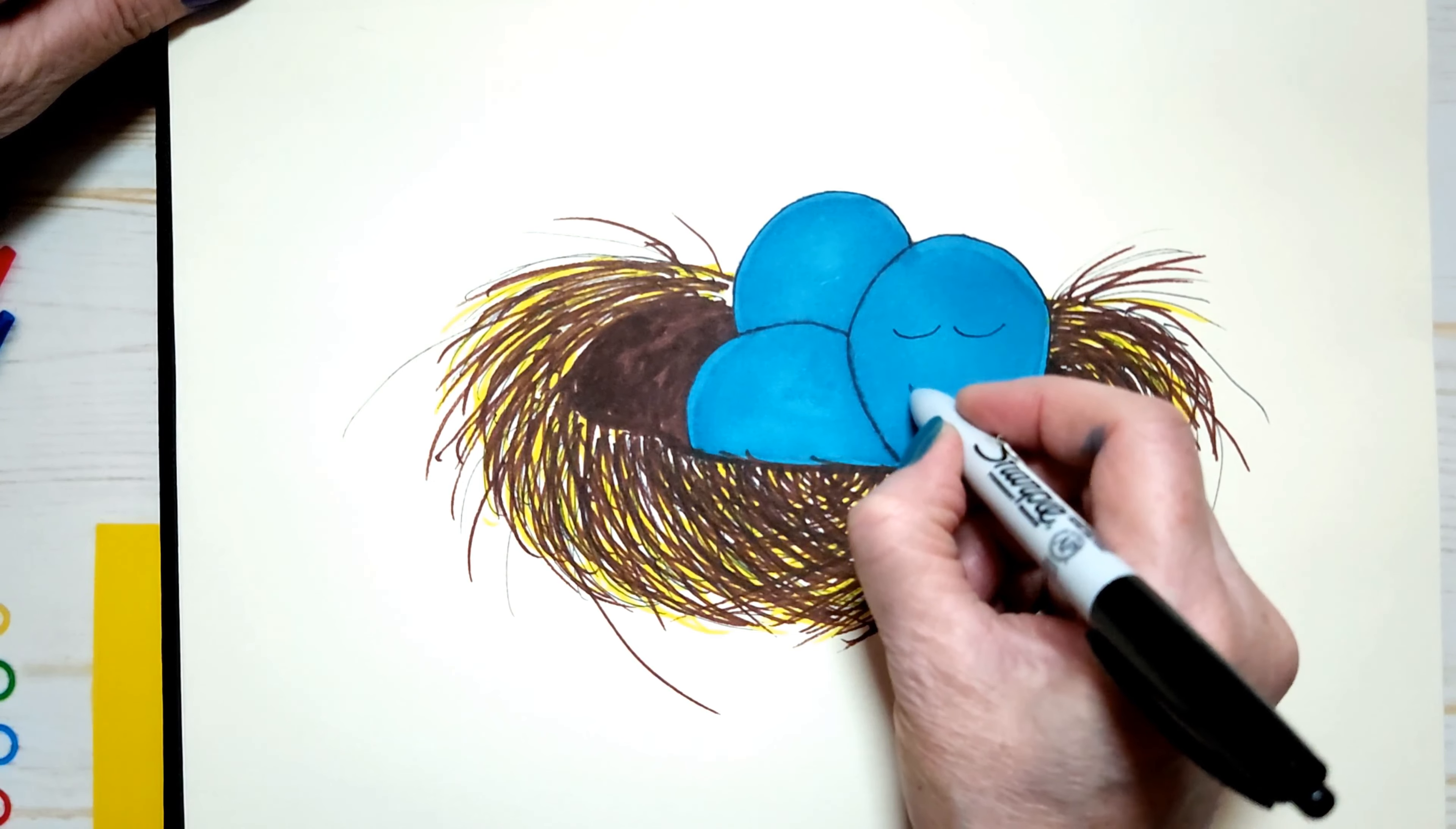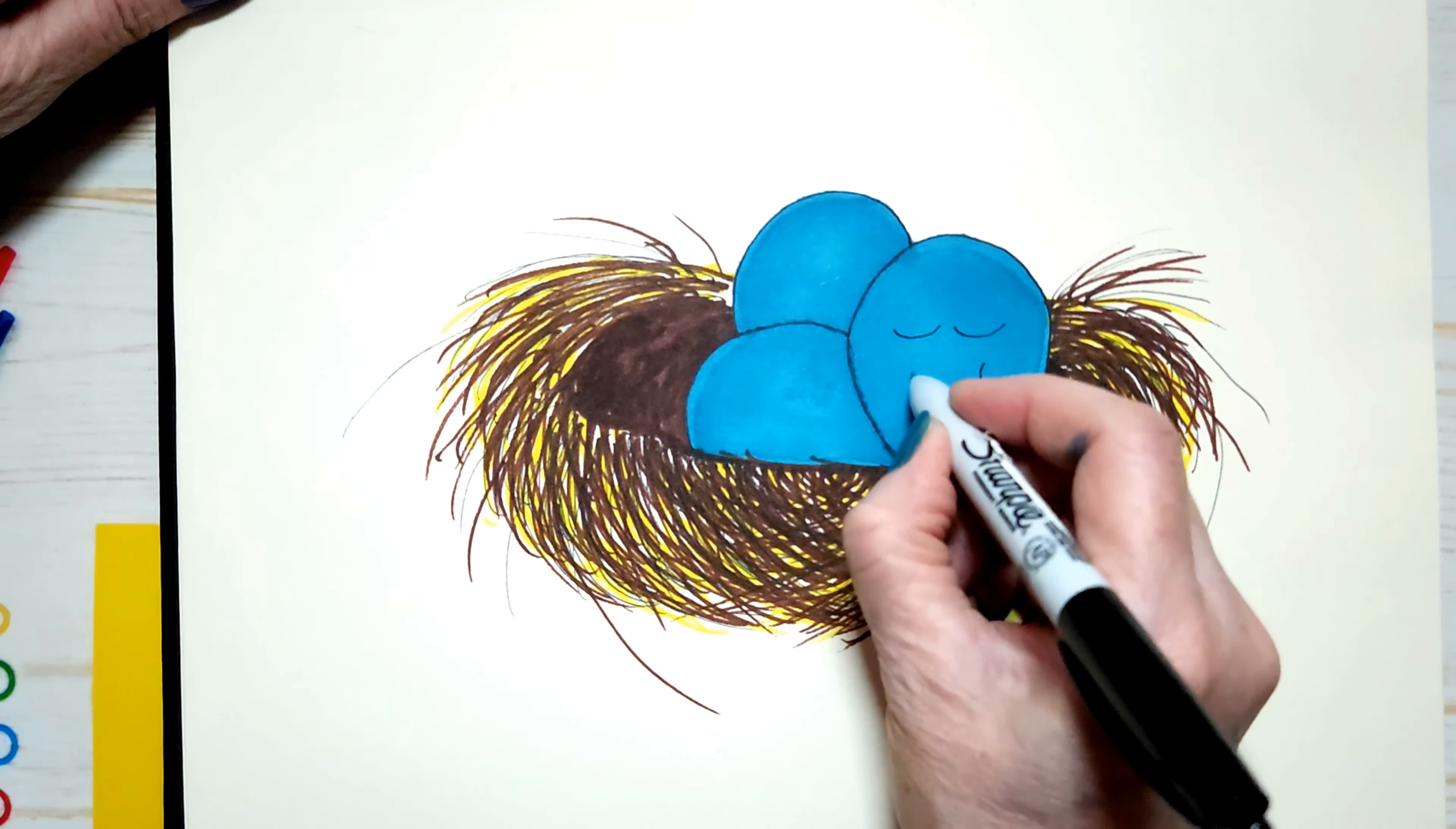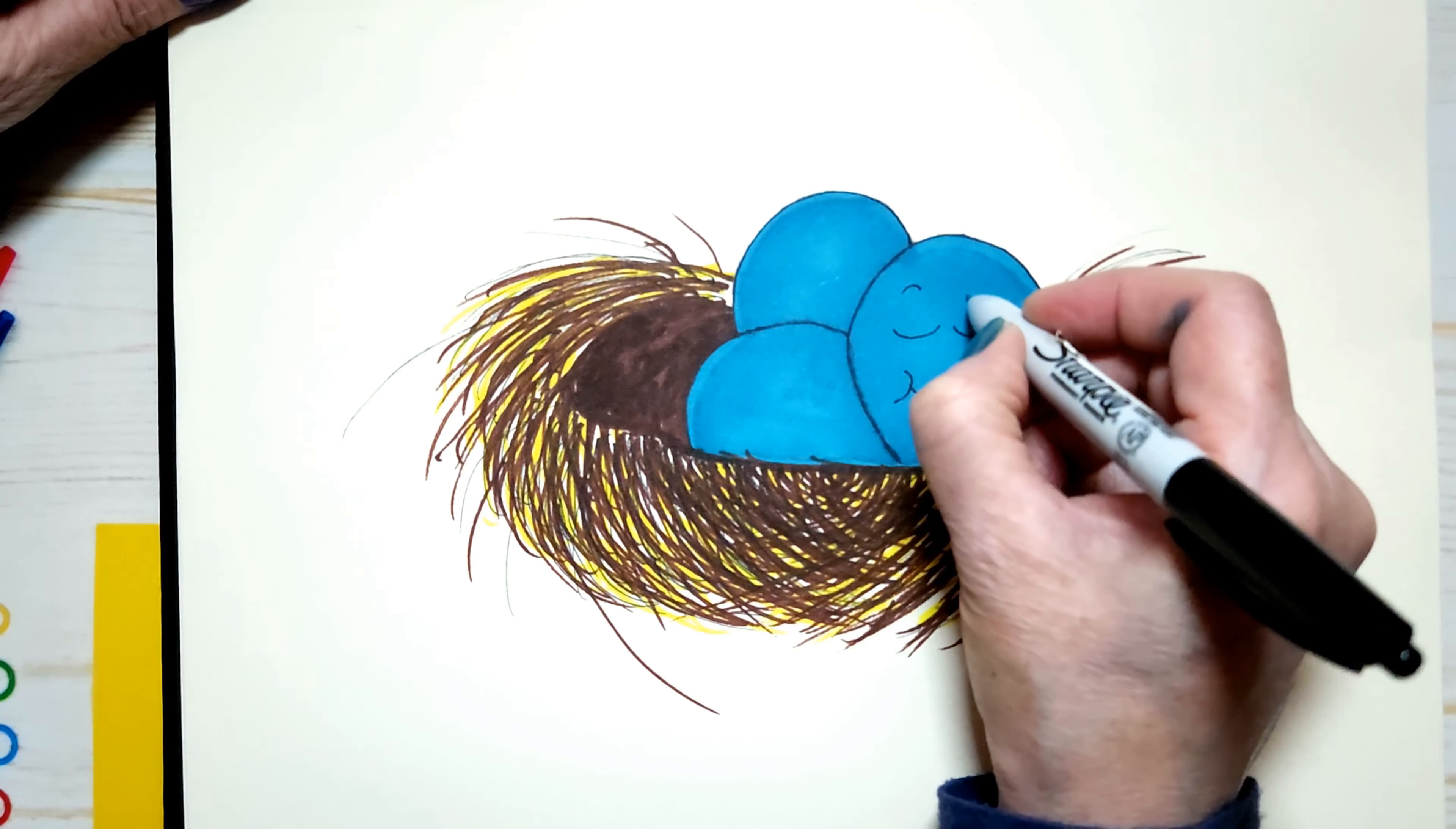So we'll give them cheeks too. Little semi-circles at the end of the line. And that looks like they've got some cheeks. And I'll give them some eyebrows. So that little boy or girl is sleeping.